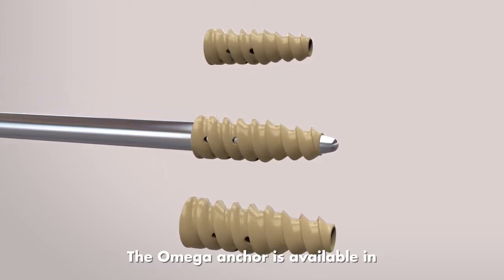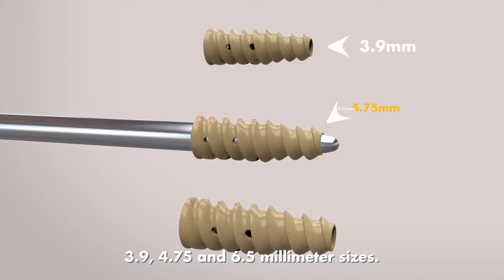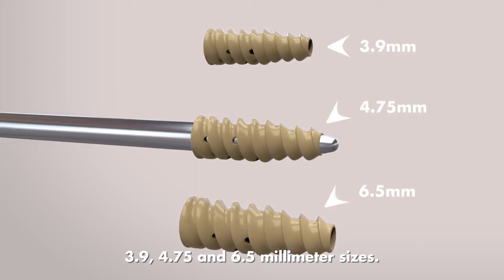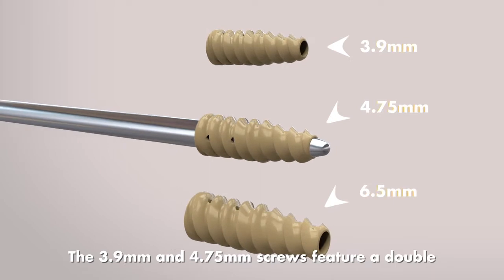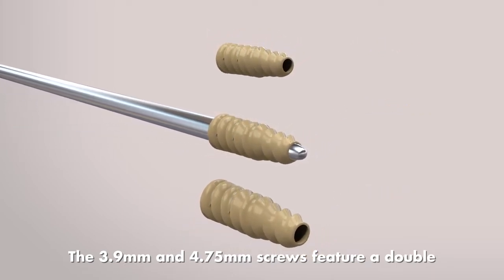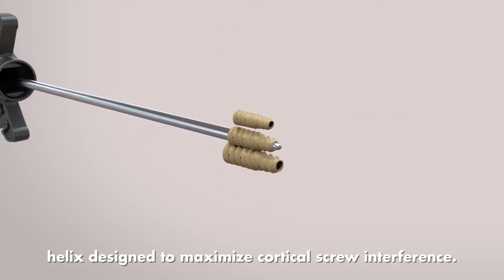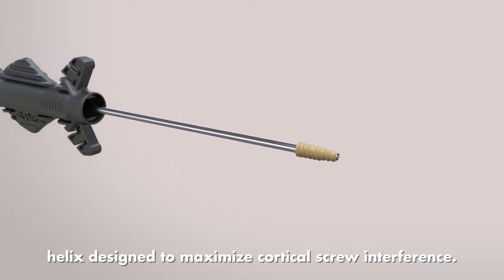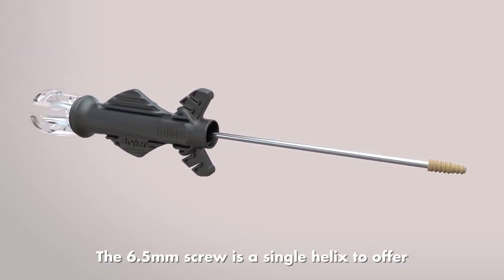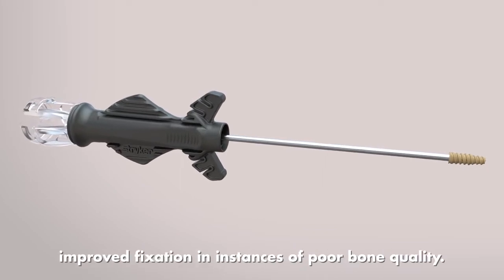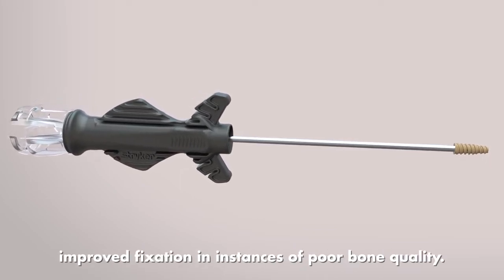The Omega anchor is available in 3.9, 4.75, and 6.5mm sizes. The 3.9mm and 4.75mm screws feature a double helix designed to maximize cortical screw interference. The 6.5mm screw is a single helix to offer improved fixation in instances of poor bone quality.